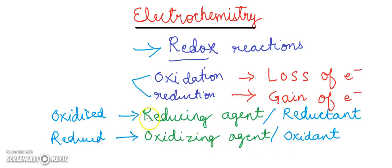For example, zinc in the solid form reacts with copper dipositive ion in the aqueous form and we get zinc in the ionic form in the aqueous solution and copper solid.